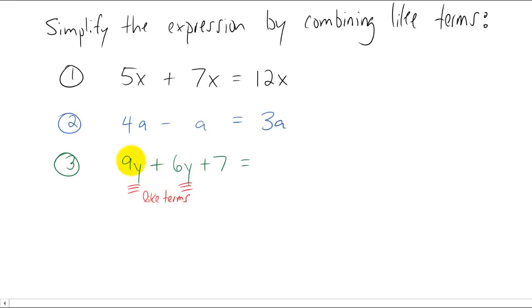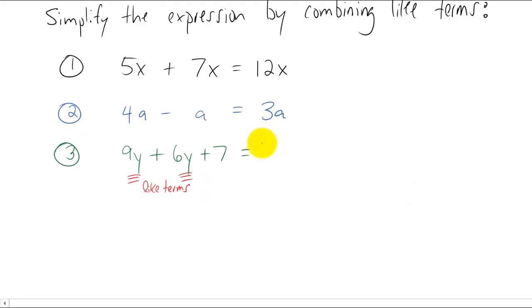So the only thing we can do is ask the question, what if we had nine of something and added six of that same thing? Well we would be left with fifteen of those things, but we still have this plus seven here. Well the plus seven just has to be carried over. So we combine the like terms nine y and six y to get fifteen y and then the plus seven just stays.